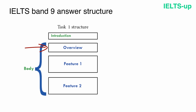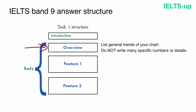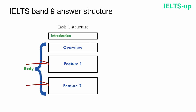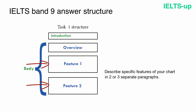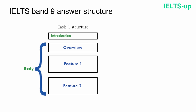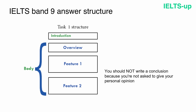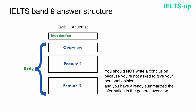Next, you should write an overview paragraph. In this paragraph, list the general trends of your chart — do not write many specific numbers or details here. The overview should contain only general information. Then describe specific features of your chart in two or three separate paragraphs. You should not write a conclusion in task 1, because you are not asked to give your personal opinion and you have already summarized the information in the general overview.